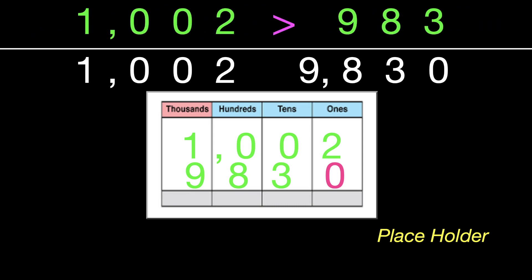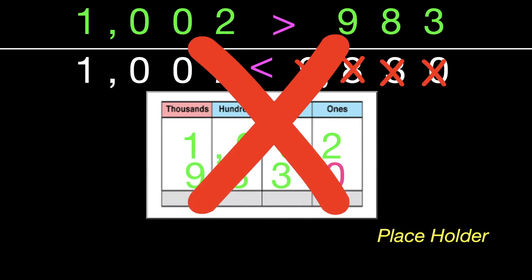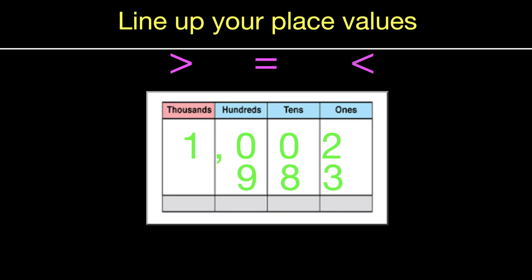So when you have the wrong, the ones are lined up wrong, that means that every single digit is not correct. And you probably are going to get the problem wrong. So make sure that you line up your place value.